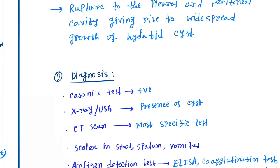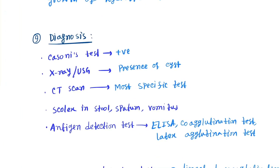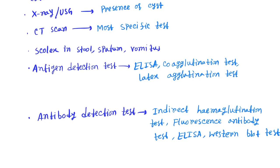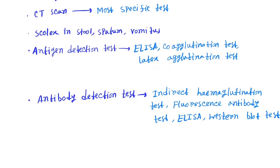Next is diagnosis. The most important test is Casoni's test. X-ray and USG you can see presence of the cyst, CT scan you can see the presence of the cyst, scolex in the stool, sputum, vomitus. Next we can do the antigen detection test, that's ELISA, coagglutination test, latex agglutination test, and antibody detection test is indirect hemagglutination test, fluorescence antibody test, ELISA, Western blot test.